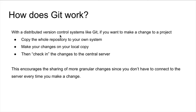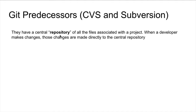There are some old processes — or if you want to call them Git predecessors — where if you wanted to make a change, you would have to connect to servers all the time. One example of Git predecessors is CVS — not the CVS pharmacy — but the CVS version control. In order for you to make a change, you had to connect to a server. Compared to Git, you make the changes to your local copy and then check the changes to the actual server.